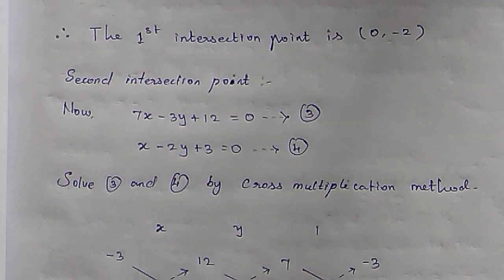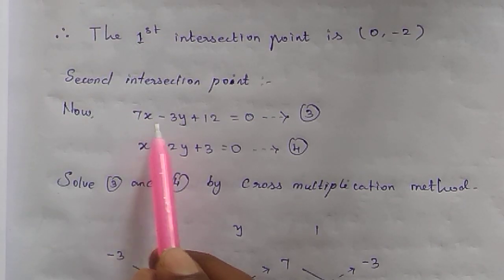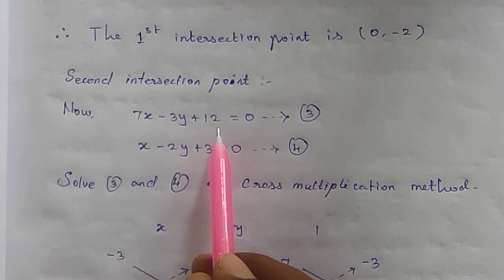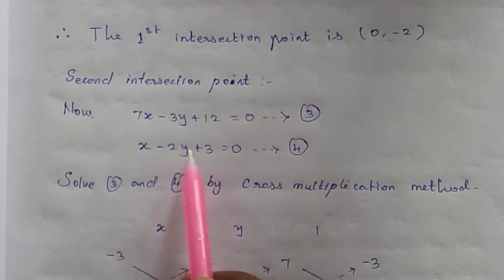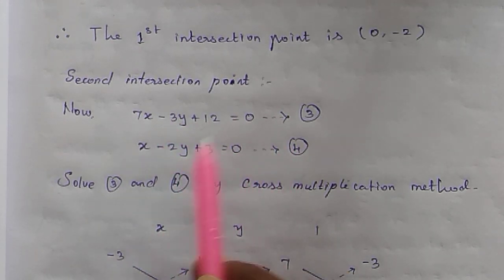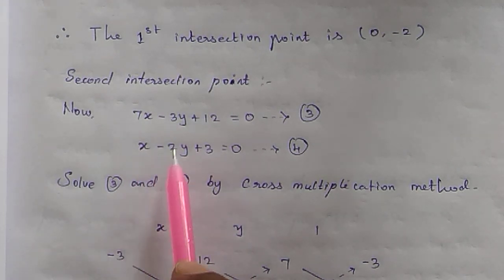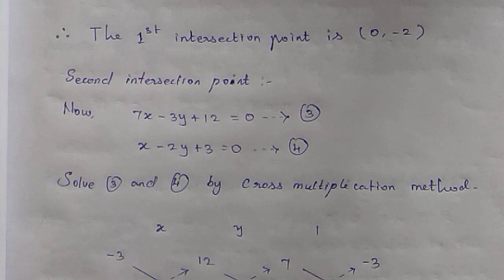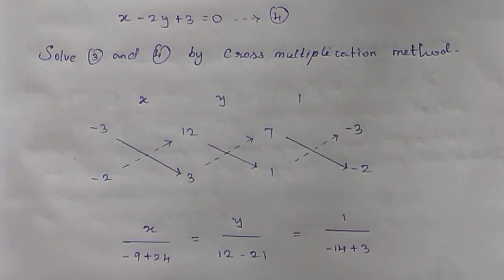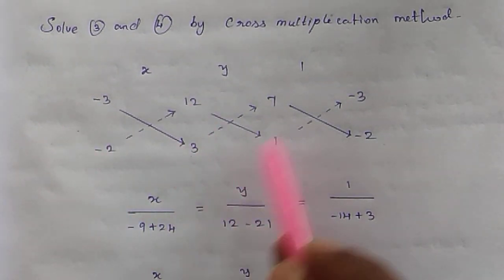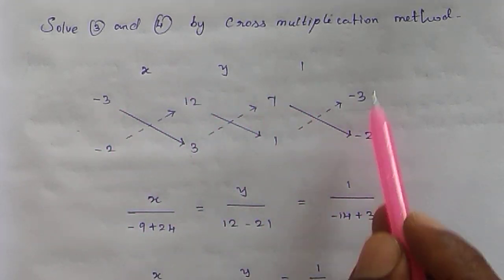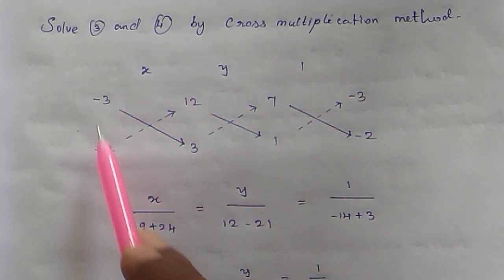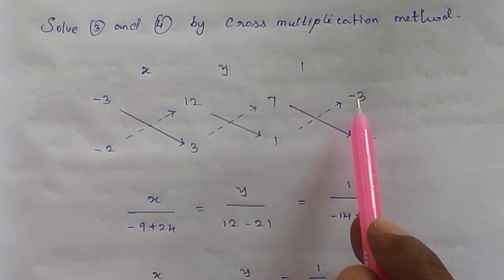For the second intersection point, we use equation 3: 7x − 3y + 12 = 0 (rearranging 7x − 2y = −12), and equation 4: x − 2y + 3 = 0 (rearranging 2y = x + 3). We solve equations 3 and 4 by cross multiplication method. Write the coefficients of x, y, and constants.